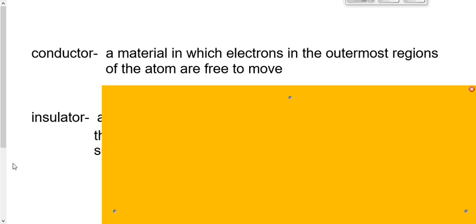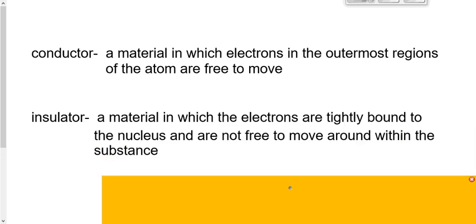Versus insulators — plastic, wood, paper, rubber. These are materials in which the electrons are more tightly bound to the nucleus and therefore not as free to move around within the substance. It doesn't mean that because you have an insulator you can't conduct electricity with it at all. Conductors just conduct electricity better. Electrons can leave any atom — just easier in conductors.